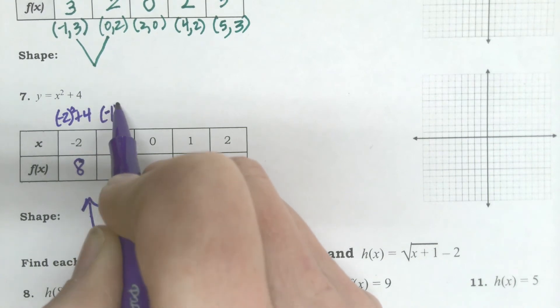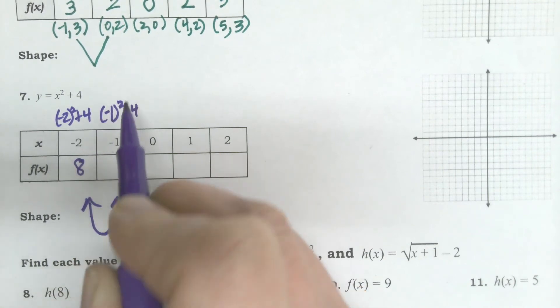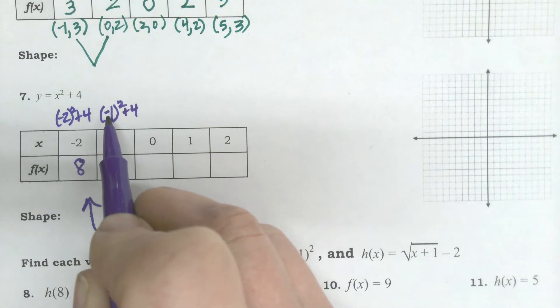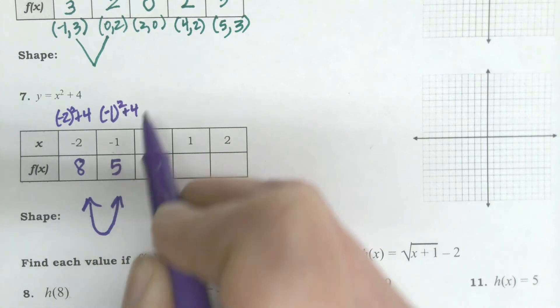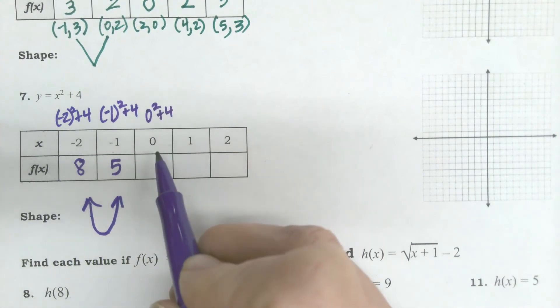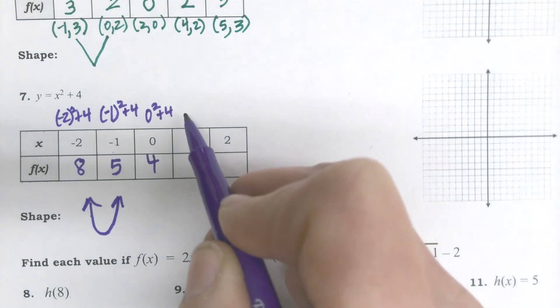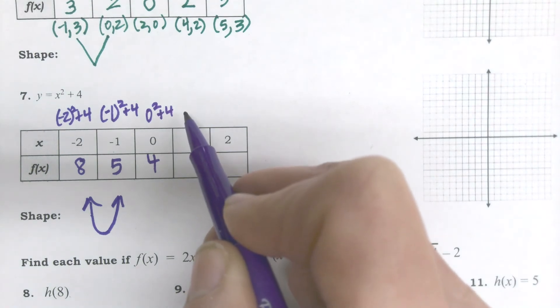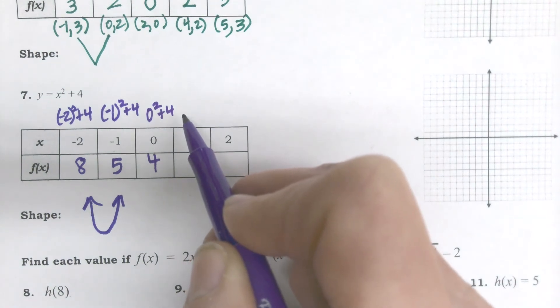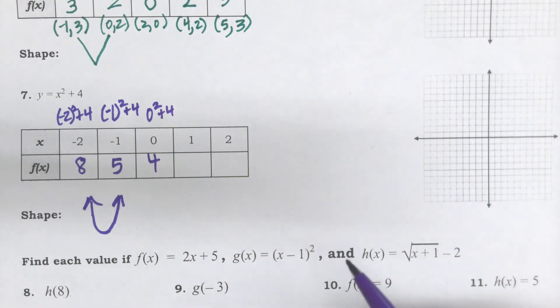Okay? Then I do negative 1 squared plus 4. Again, that's negative 1 times negative 1. 1. 1 plus 4 is? 5. 0 squared plus 4? 4. 4. What the heck? What? What did I do? 0, 3, 4, 5. Oh, you know why?